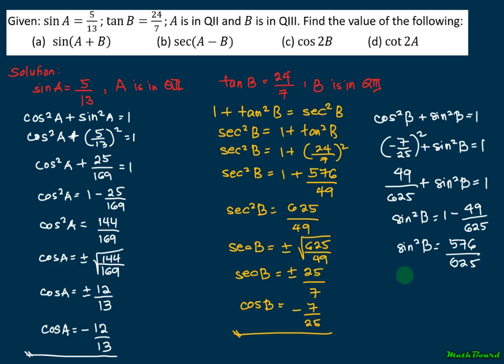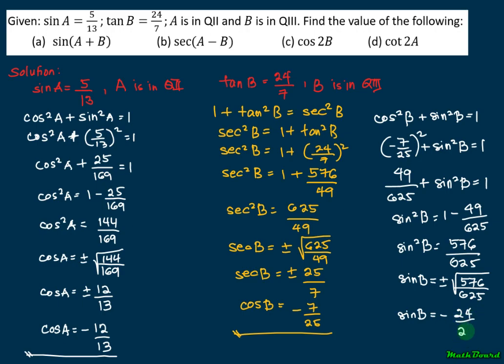We take the square root. So sine B is plus or minus the square root of 576 over 625. Since B is in the third quadrant, sine B is also negative. The square root of 576 is 24 and the square root of 625 is 25. So sine B is equal to negative 24 over 25.